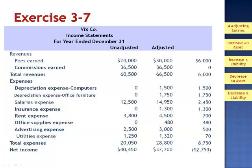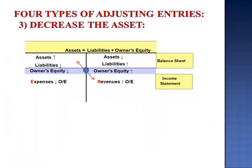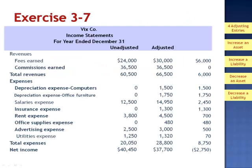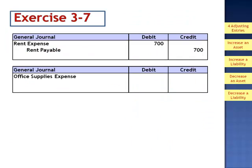Office supplies expense went from $0 to $480. Office supplies have to be purchased before they're used, so we have a balance in the asset account supplies, which apparently is now too high. During the adjusting entry process, the asset supplies was decreased — the journal entry debited the expense account supplies expense and credited the asset supplies. The probable adjusting entry debits the expense account for $480 and credits the asset account office supplies.